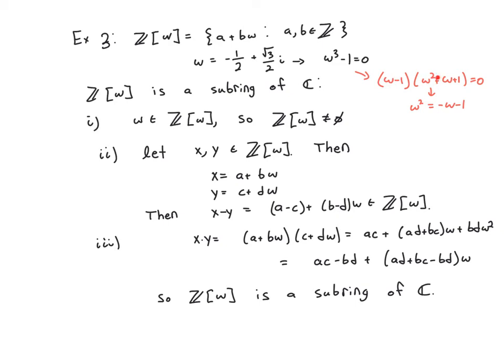which tells you that omega squared is equal to negative omega minus 1. So you can replace omega squared with negative omega minus 1, which means you get a negative BD times omega and a negative BD up front.